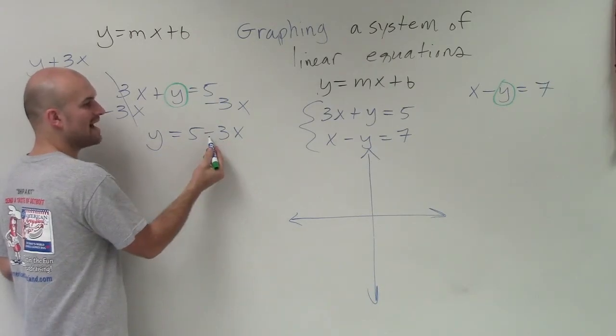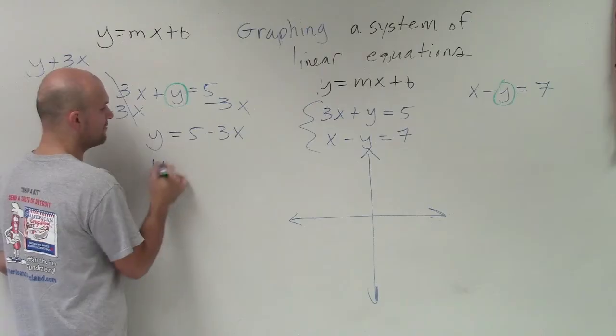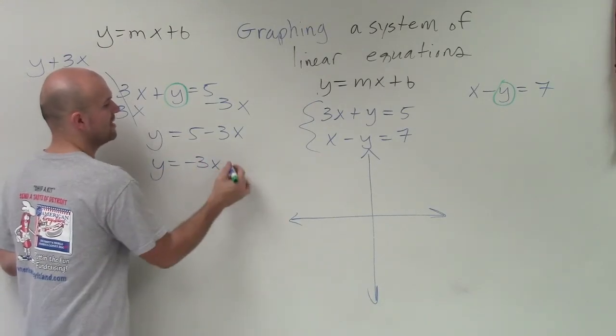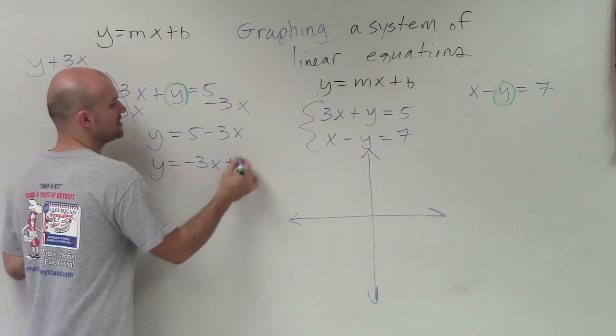So make sure, though, it's a minus 3x. So when I rewrite this, I'm going to take that sign with it. And then the 5 is positive, so it would be plus 5.